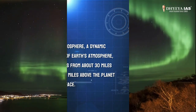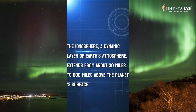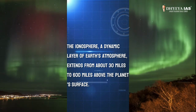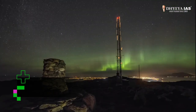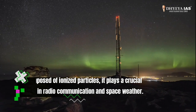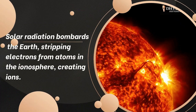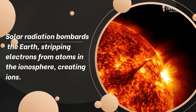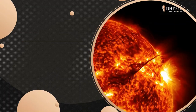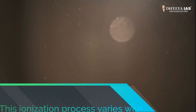Now let's see what the ionosphere is. The ionosphere is a dynamic layer of Earth's atmosphere, extending from about 30 miles to 600 miles above the planet's surface. Composed of ionized particles, it plays a crucial role in radio communication and space weather. Solar radiation bombards the Earth, stripping electrons from atoms in the ionosphere and creating ions. This ionization process varies with sunlight, causing daily fluctuations.